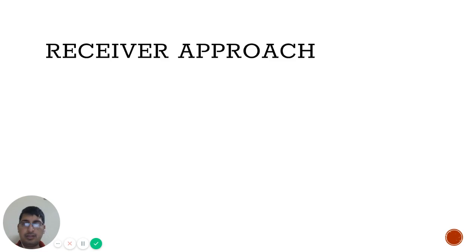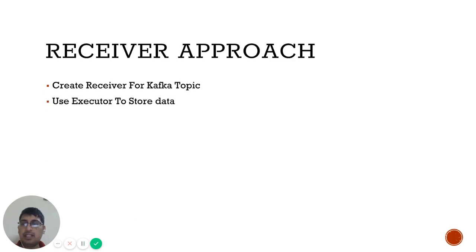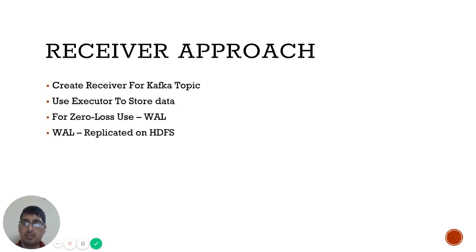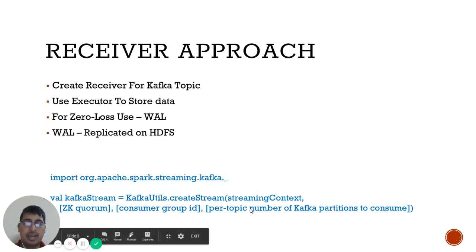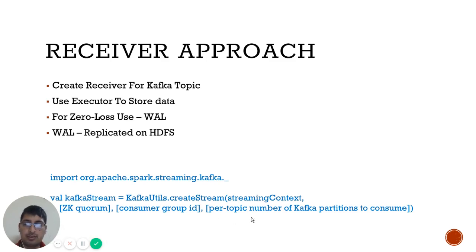To summarize: we create a receiver which receives messages from Kafka, and the receiver stores the received data on the executor. If zero data loss is enabled, it also creates write-ahead logs, which are replicated on a storage system like HDFS or S3 on AWS. Here is the simple code — to create a stream using the receiver-based approach, you call KafkaUtils.createStream() and pass the respective configuration parameters. You'll get a stream and can then process it as usual in a streaming job.